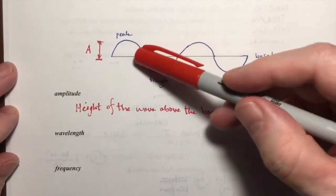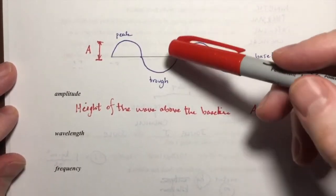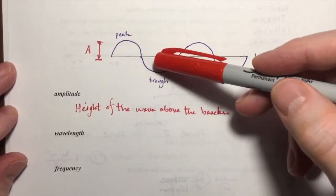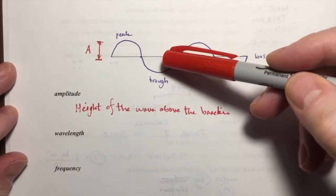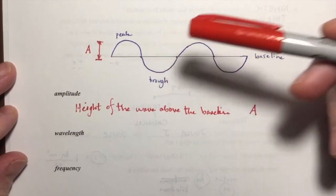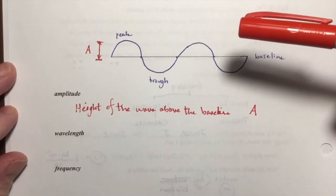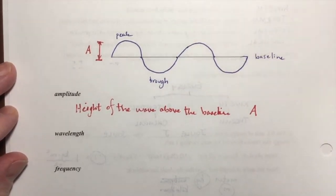If the peak and the trough are the same magnitude or size, then that height of the peak above the baseline should also be the depth of the trough below the baseline. So that's the amplitude.